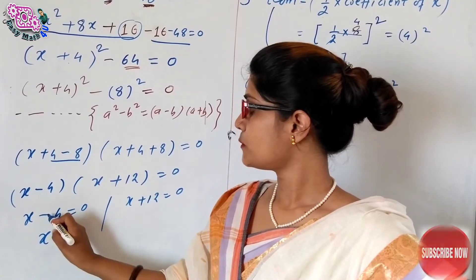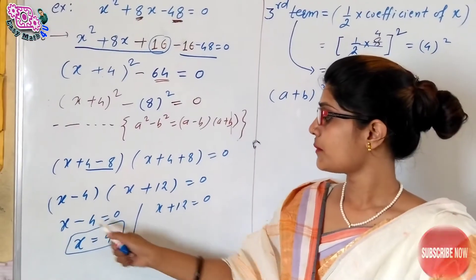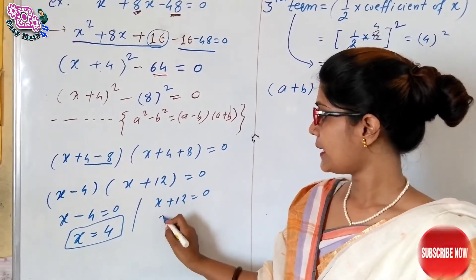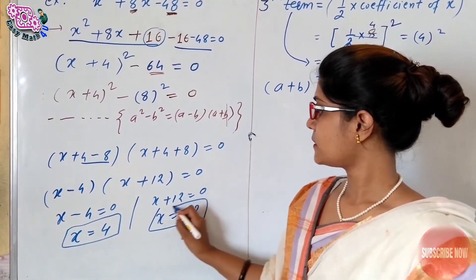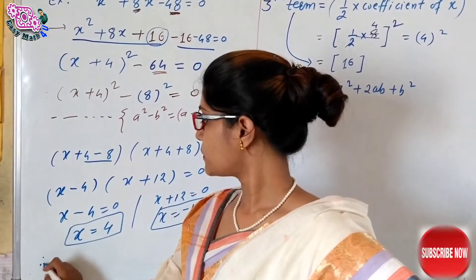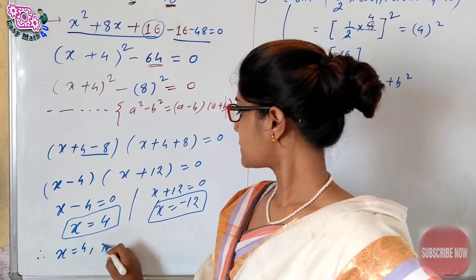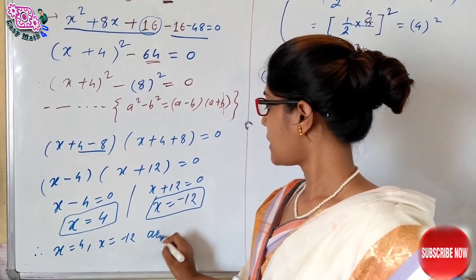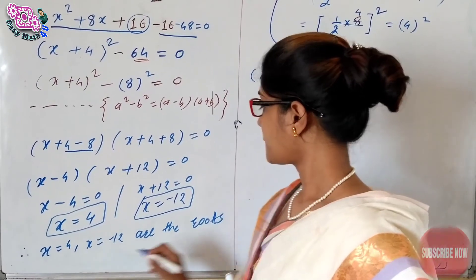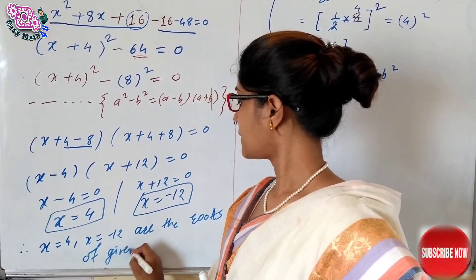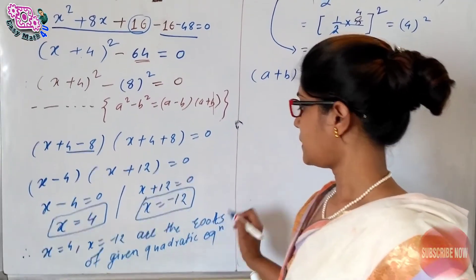Therefore, from x minus 4 equals 0, shifting minus 4 to the other side gives x equals positive 4. From x plus 12 equals 0, shifting plus 12 gives x equals minus 12. So the roots are x equals 4 and x equals minus 12.